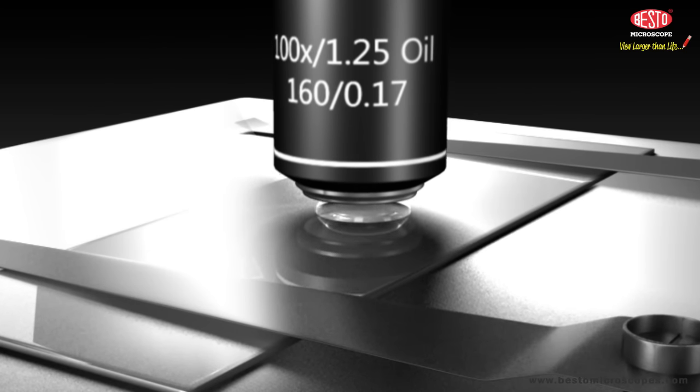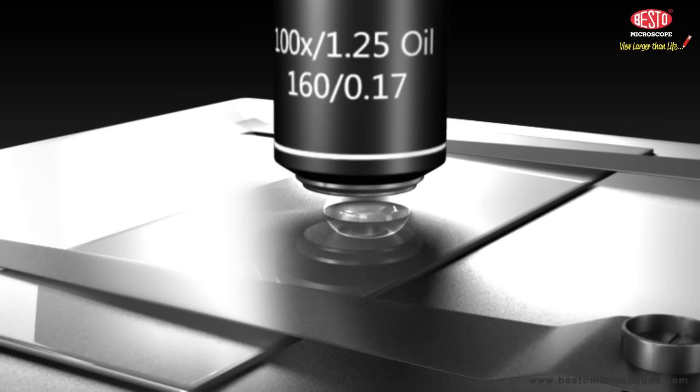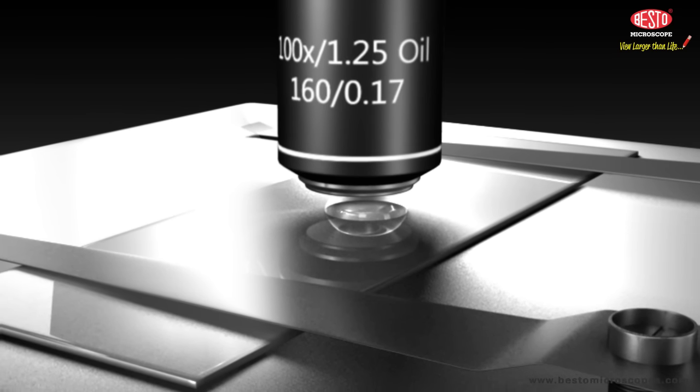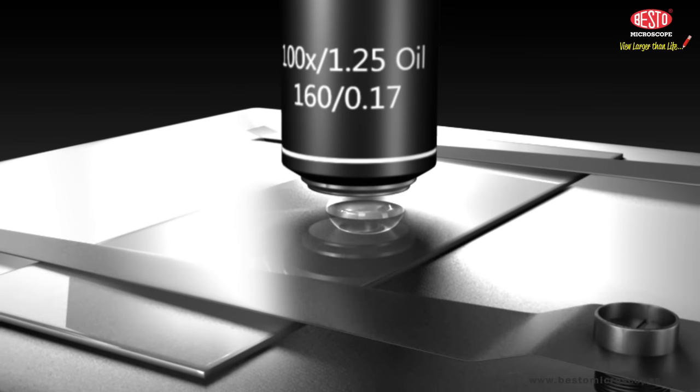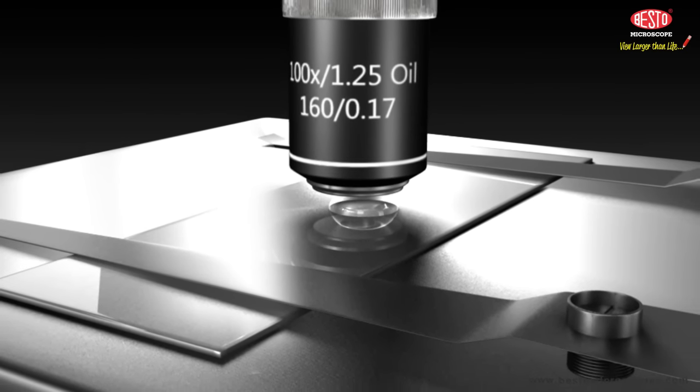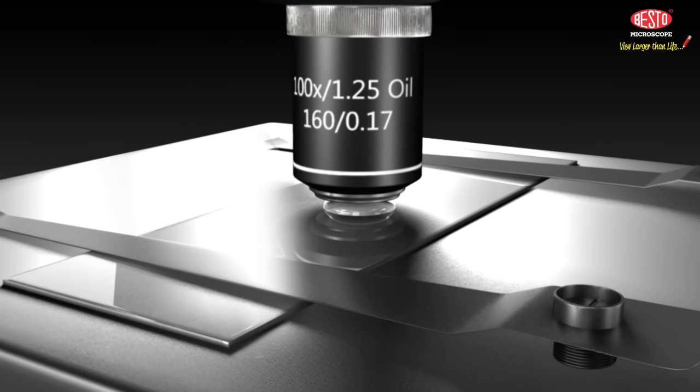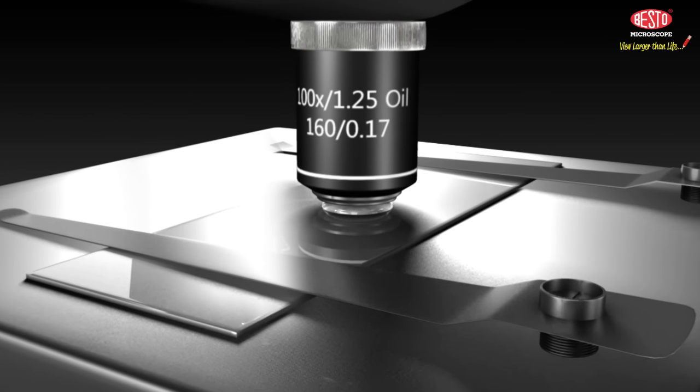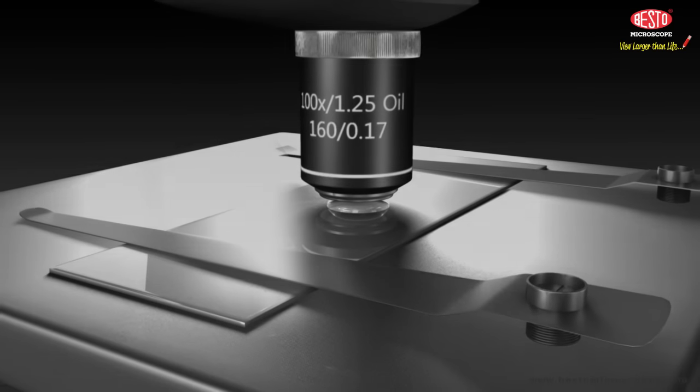The oil bends the light more than the air would, so more light can enter the microscope. Oil immersion lenses make it easier to see samples because they increase the amount of light going through the sample or slide and microscope and into your eye.